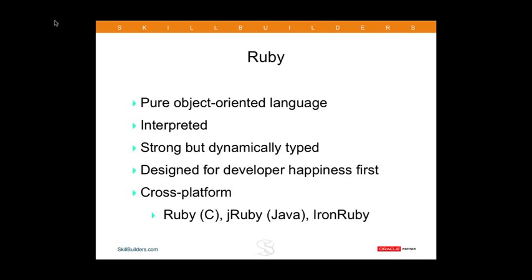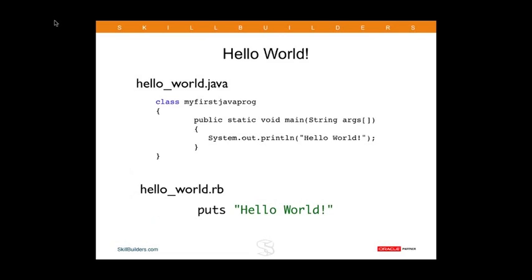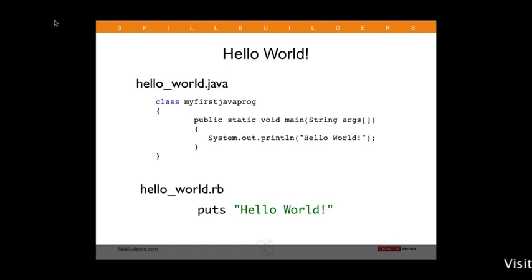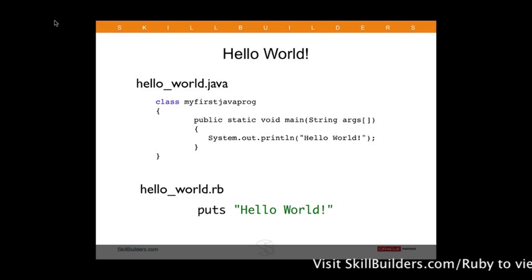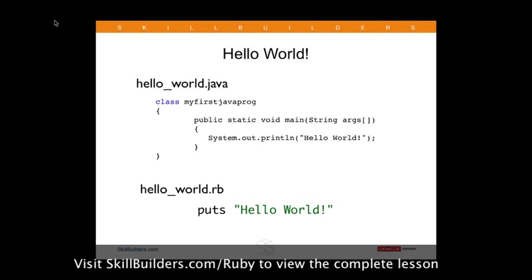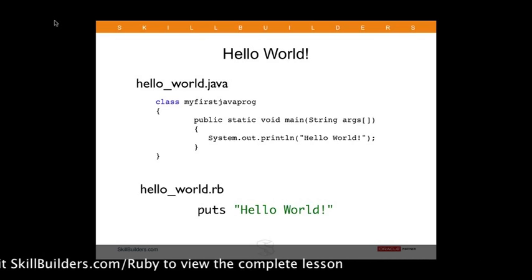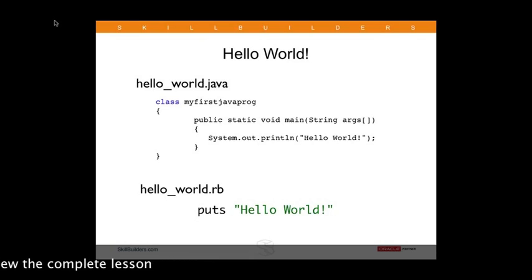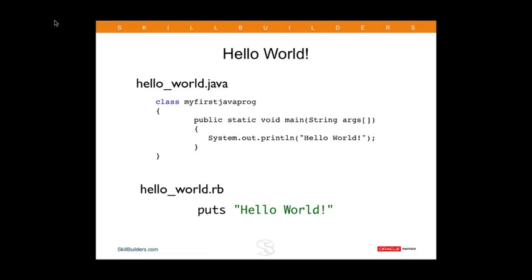Ruby is also designed for developer happiness. If you think about the kinds of applications we're used to seeing with the Java programming language — here's a Hello World in Java — we have a lot of boilerplate code that we need to either type or generate just to print the Hello World string to the screen. Ruby deals away with a lot of that, and you can see on the bottom of the slide that the Hello World program in Ruby is just one line.